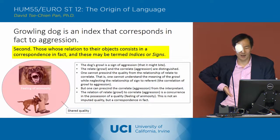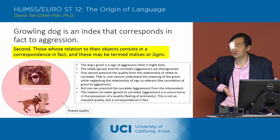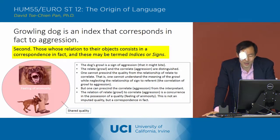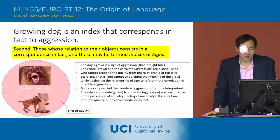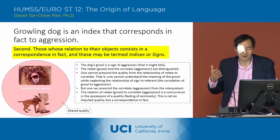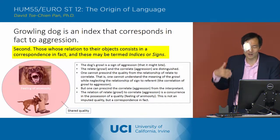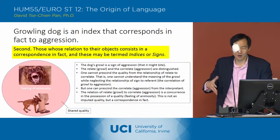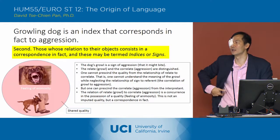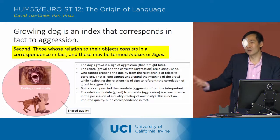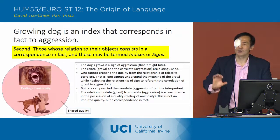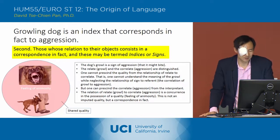Growling could be a sign of something else. You can't understand the meaning of the growl while neglecting the relationship of the growl to the biting, because those are two different things. Growling and biting are two different things, and you have to understand that the growl is a sign that the dog might bite.